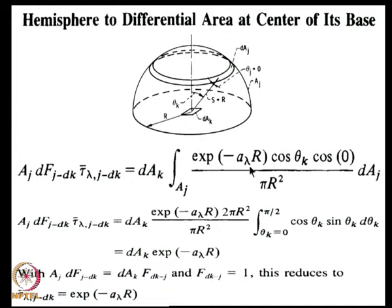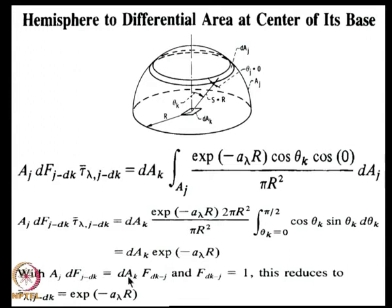All terms are independent of θ_k; they come out and you can express dA_{jk} in terms of θ_k. Finally, you have a result which can be integrated very easily. You get A_j F_{dA_j to dA_k} into the transmittance, which is dA_k times e to the power of minus A_λ r. Using reciprocity, which is always valid, and knowing that all radiation leaving dA_k reaches j, we conclude that the mean transmittance is e^{-A_λ r}.